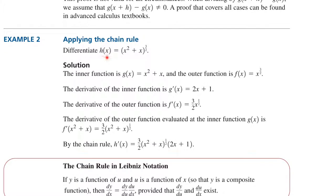Let's find the derivative of H of x equals (x² plus x) to the power of 3 over 2. If we assume F of x equals x to the power of 3 over 2 and G of x equals x² plus x, the chain rule gives us the derivative. Derivative of F of x is 3 over 2 times x to the power of negative 1 over 2. The derivative of AXⁿ when n is a real number is A·n·x to the power of n minus 1. Derivative of G of x is 2x plus 1. Therefore, the final answer is 3 over 2 times the derivative of F at G of x times G prime of x.